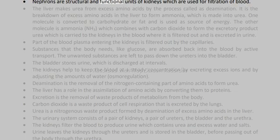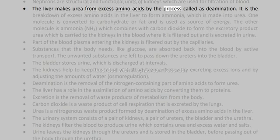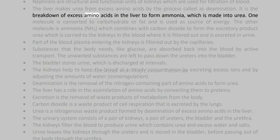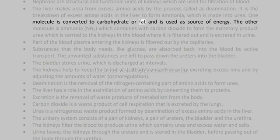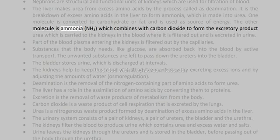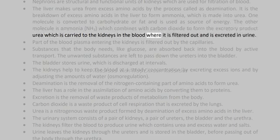Nephrons are structural and functional units of kidneys which are used for filtration of blood. The liver makes urea from excess amino acids by the process called deamination. It is the breakdown of excess amino acids in the liver to form ammonia, which is made into urea. One molecule is converted to carbohydrate or fat and is used as a source of energy. The other molecule is ammonia (NH3), which combines with carbon dioxide to form the excretory product urea, which is carried to the kidneys in the blood where it is filtered out and excreted in urine.